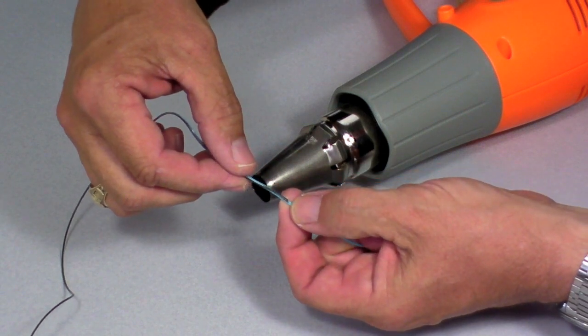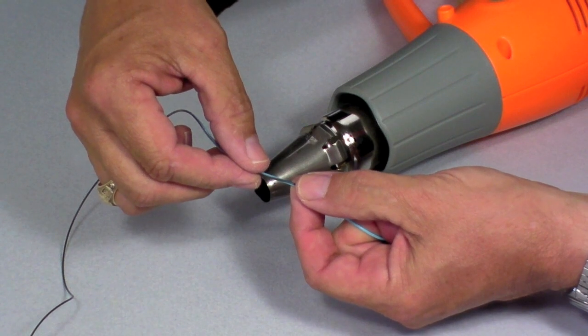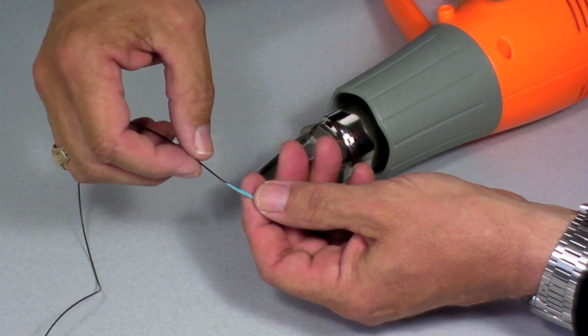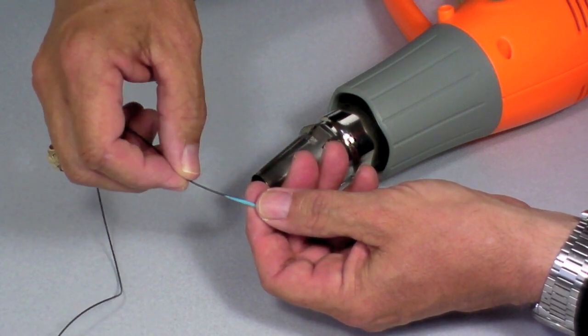The back end is nice and smooth. There's no bump to catch on the guides as we pull it through, and the front tip of the intermediate has been flowed into the T-8, so it won't lever apart while we cast.